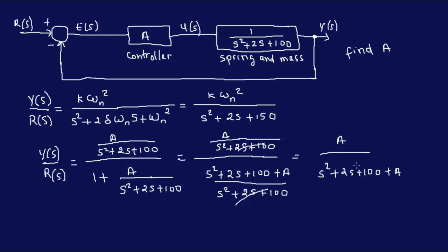Now if this is equal to this, you can clearly see that 100 plus A should give me 150 for the two equations to be equal. So of course A is equal to 50.